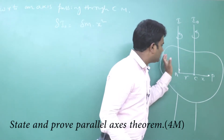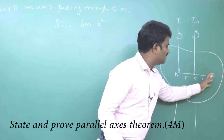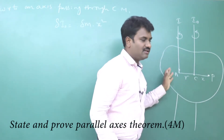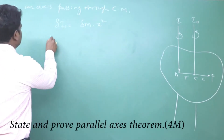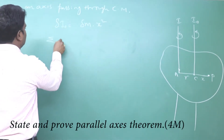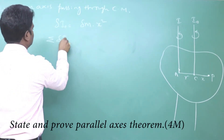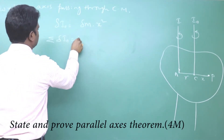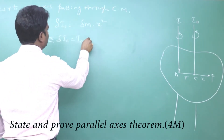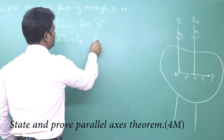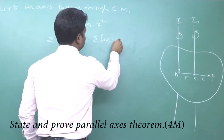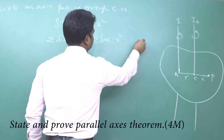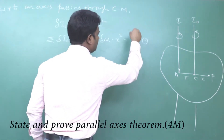The moment of inertia of all such particles lying on the plane is the sum: Σ δI₀ = I₀ = Σ δm · x².